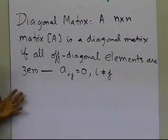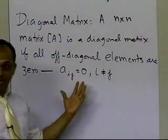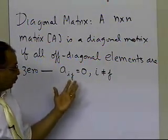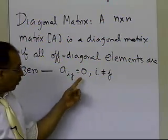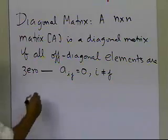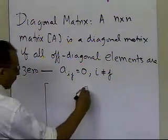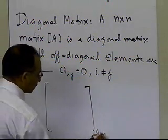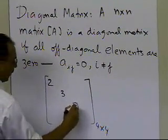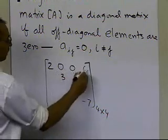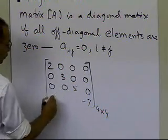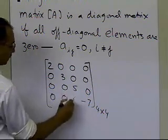What makes a diagonal matrix is not what is on the diagonal — what makes a square matrix diagonal is what is not on the diagonal. You want all the off-diagonal elements to be 0. An example of that: let's take a 4 by 4 matrix with 2, 3, 5, minus 7 on the diagonal, and everything else has to be 0.